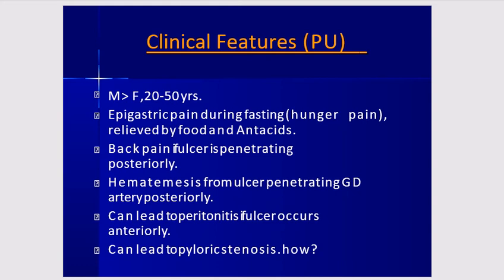Features of peptic ulcer: males are more commonly affected; age group is 20 to 50 years; epigastric pain occurs during fasting — hunger pain relieved by food and antacids. Back pain occurs if the ulcer is penetrating posteriorly. Hematemesis results from ulcer penetrating the gastroduodenal artery posteriorly. The ulcer can lead to peritonitis if it perforates anteriorly, and can also lead to pyloric stenosis.